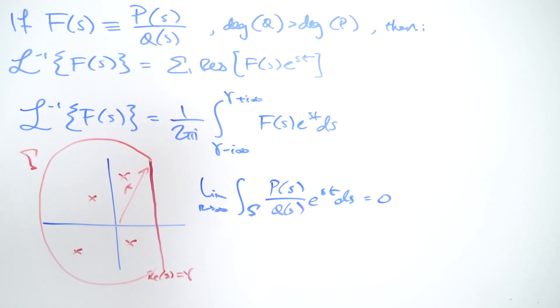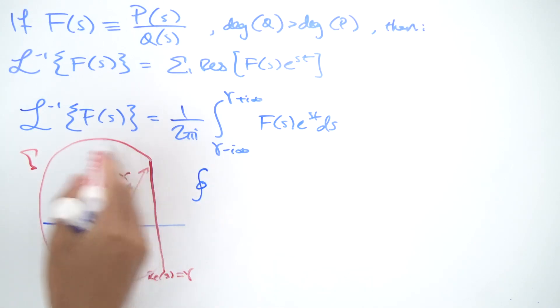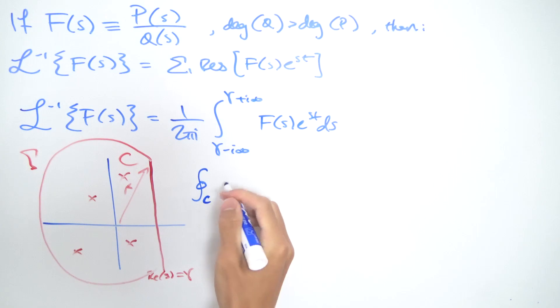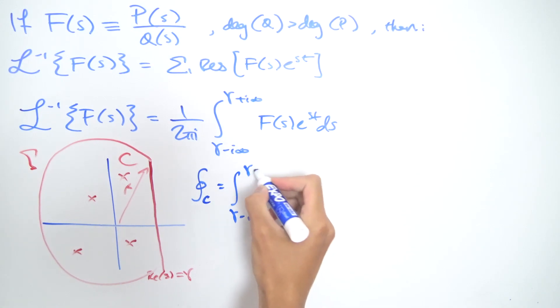It's a pretty useful lemma because notice if this is true, then if we consider the contour integral over the path called the whole entire contour C, this can be decomposed into the integral over this path first, which is γ minus i∞ to γ plus i∞, plus the integral over Γ.